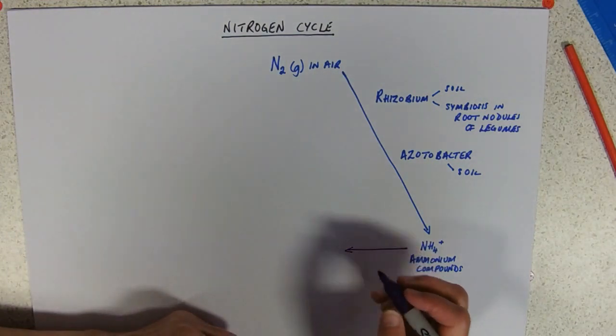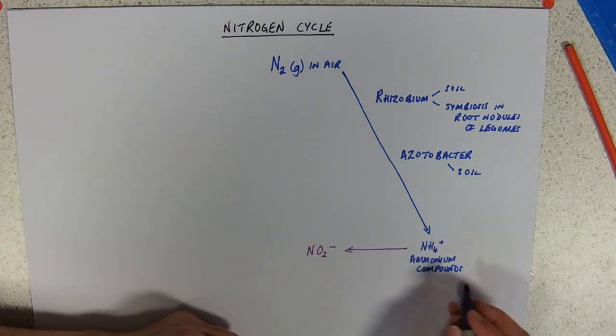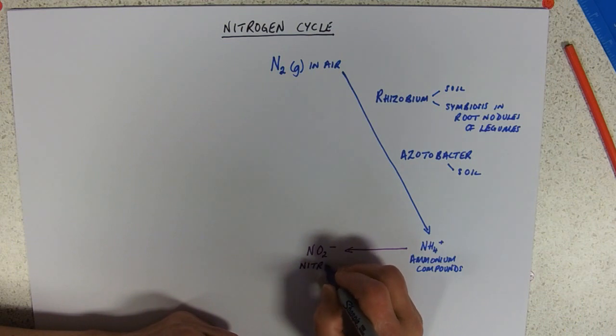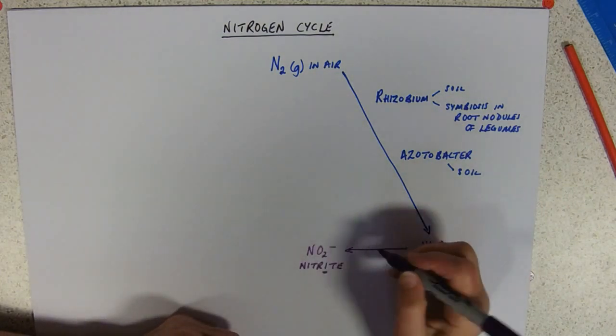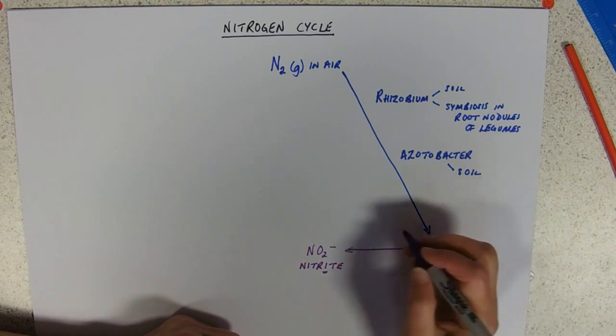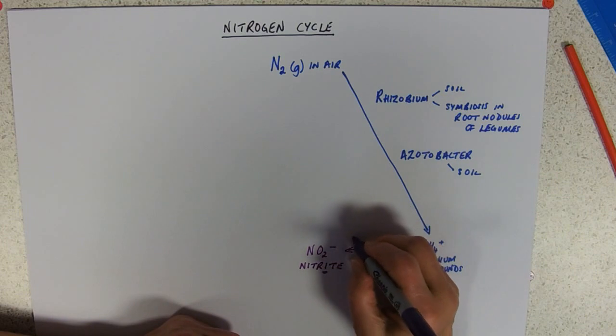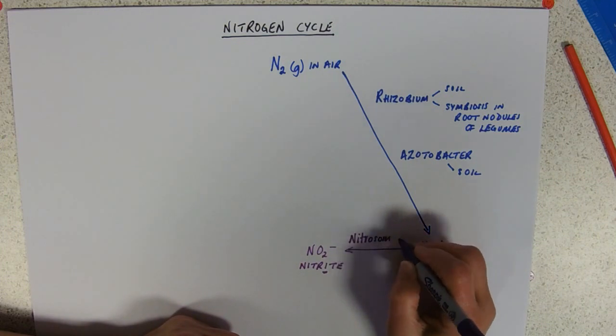It's a two stage process. The first stage is to make our ammonium into nitrite. And again, be careful because it's only one letter different from nitrate. And the bacteria that does that is Nitrosomonas. Sounding not very certain now. I was before I started the video.